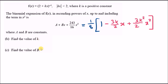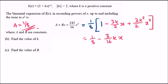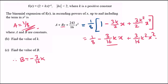Parts B and C: find the values of k and b. With a equals one eighth, expanding the right side gives: one eighth for the constant, minus 3 over 16 times kx for the x term, and plus 3 over 16 k squared x squared for the x squared term. Matching coefficients, b equals minus 3 over 16 k.